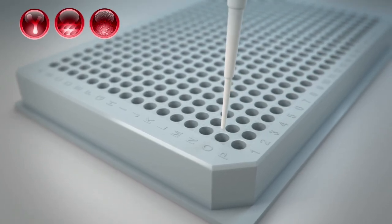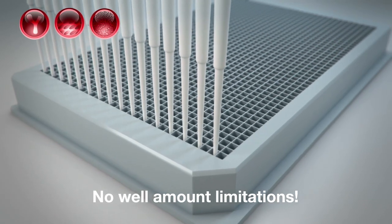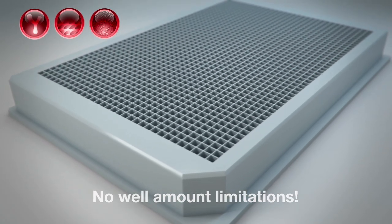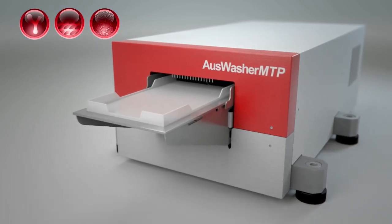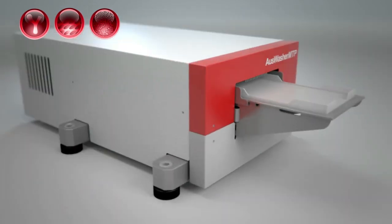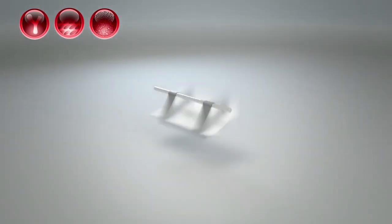Unlike conventional washers, where the time to aspirate wash buffer increases with the number of wells in a plate, Oz Washer empties 96, 384, or even 1536 well plates in the same incredibly fast time.